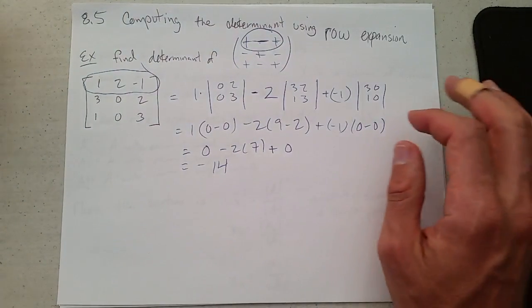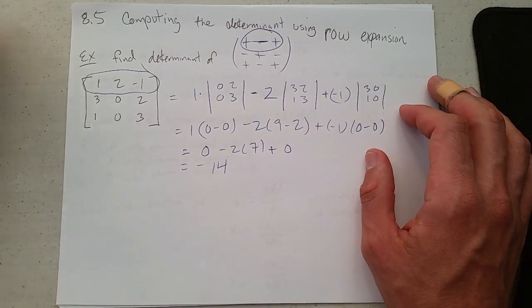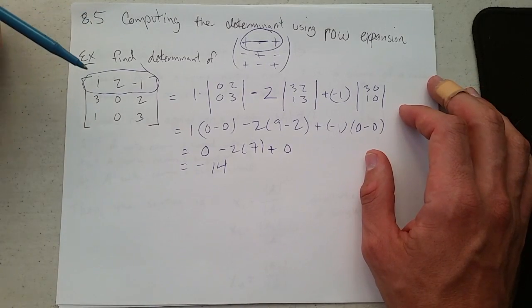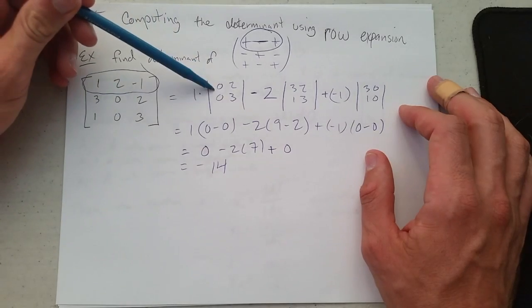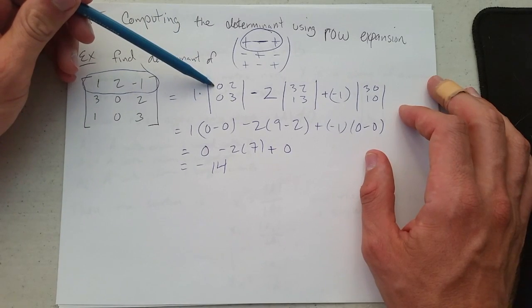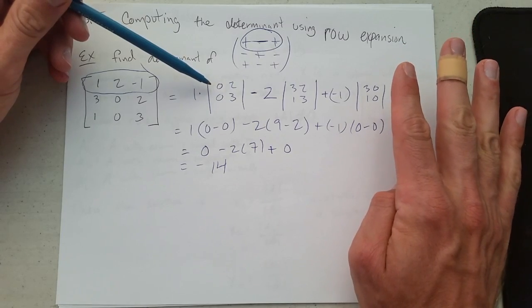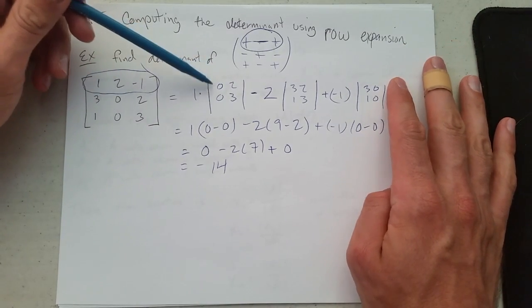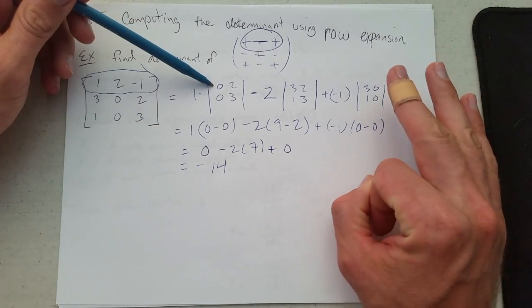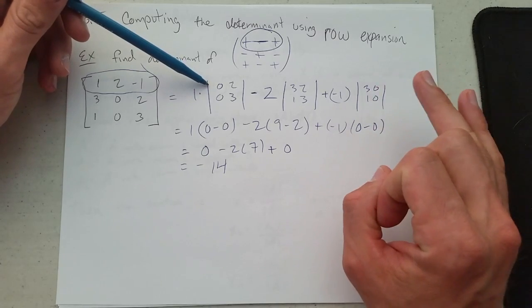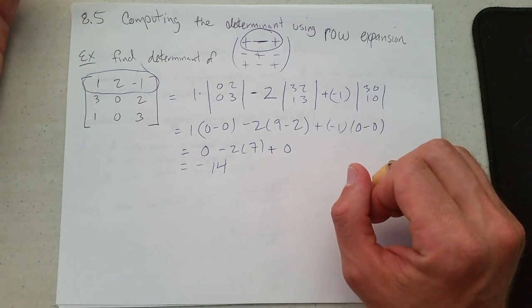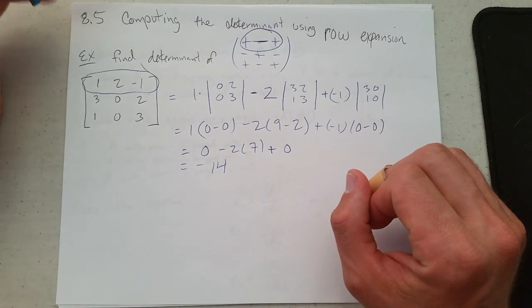Alright, so that was a determinant using row expansion. Now, if you do a 4 by 4 determinant or a 5 by 5 determinant, unfortunately each of these minors—if you did a 5 by 5, your minors would be 4 by 4. You'd have to get the determinant using another row expansion, giving you a 3 by 3, and then another row expansion 2 by 2. So a determinant bigger than 3 by 3 can be a big pain.